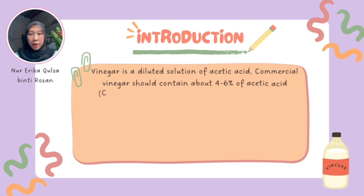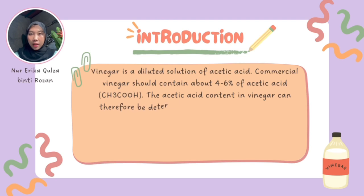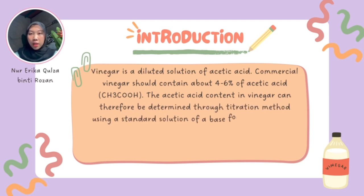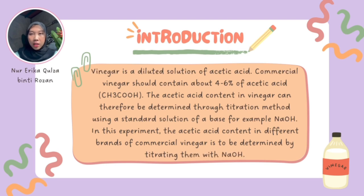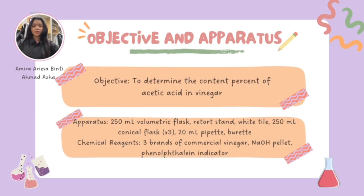Commercial vinegar should contain about 4-6% acetic acid. The acetic acid content in vinegar can be determined through a titration method using a standard solution of a base, for example, sodium hydroxide. In this experiment, the acetic acid content in different brands of commercial vinegar is to be determined by titrating them with sodium hydroxide. This experiment is done in order to determine the weight/volume percent of acetic acid in vinegar.